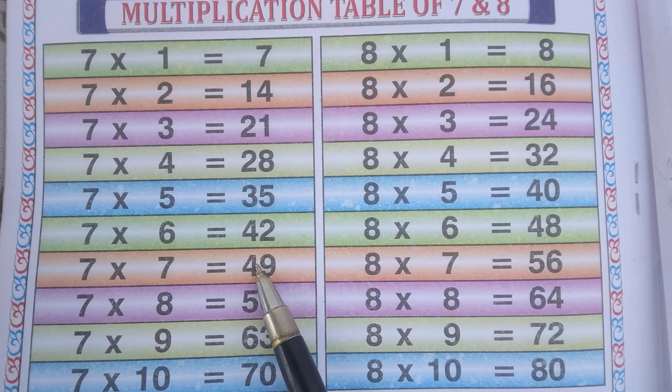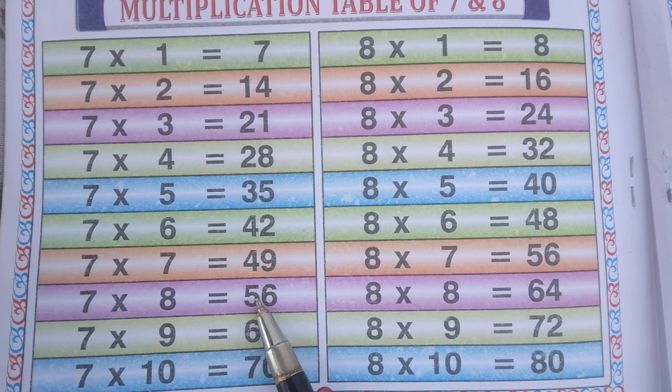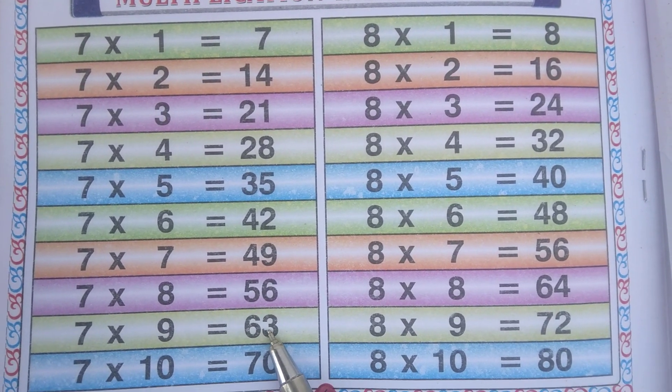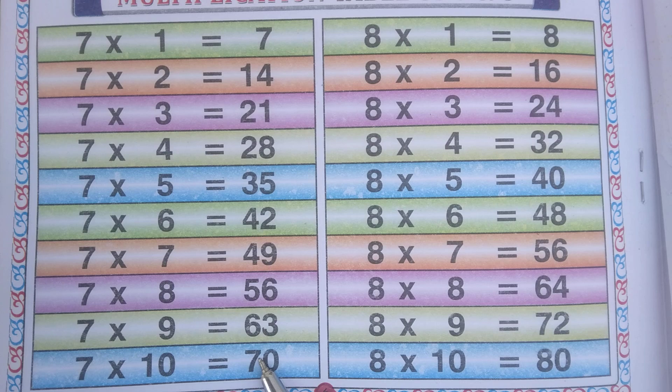7 7s are 49, 7 8s are 56, 7 9s are 63, 7 10s are 70,